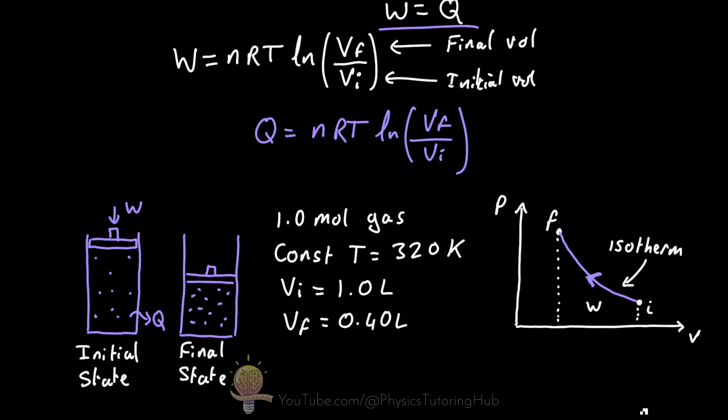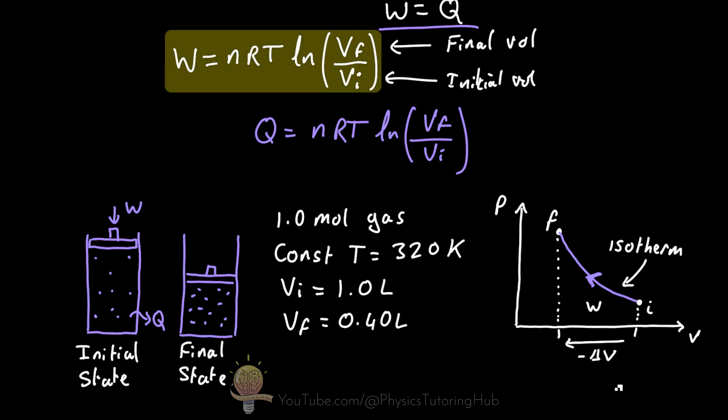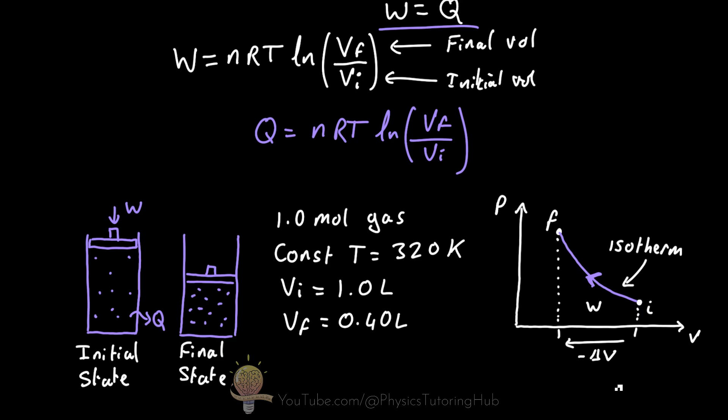Well, the work done is the area under the isotherm here, which can be found from this equation. So we simply need to plug in our known values into this equation to get the amount of work done by the gas during this volume change.